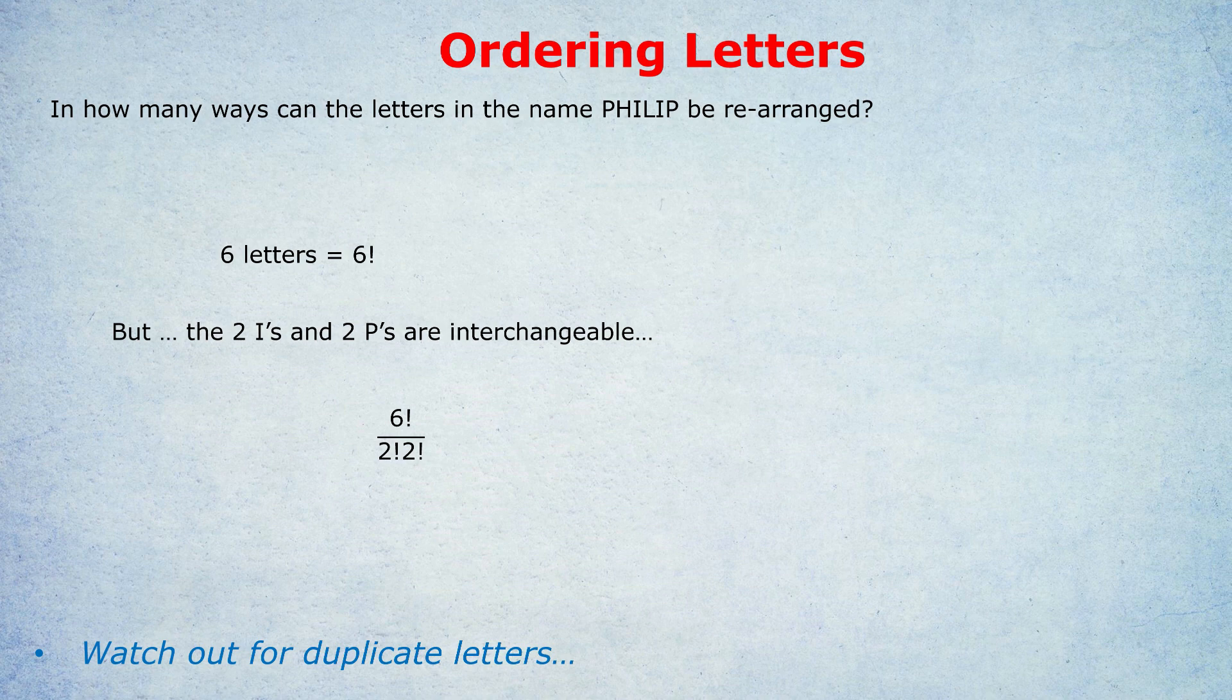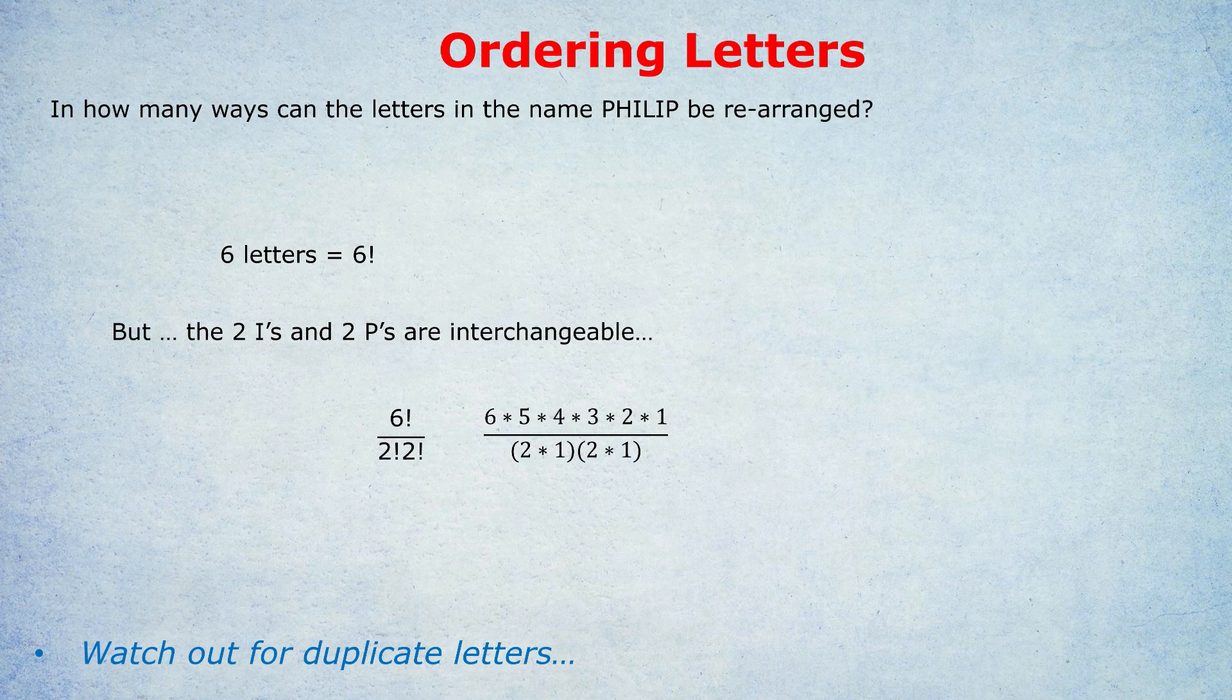To work this out, if you're not familiar, you would write six times five times four times three times two times one for six factorial and just two times one each time for the two factorial. Now I strongly recommend cancelling stuff out before you work out that long thing on a calculator or manually. For example the two times one in the denominator can be cancelled out with one of the two times ones in the numerator, and this is what you're left with if you do that. Additionally that two in the denominator could be cancelled out either with the six or with the four to further simplify the calculation.